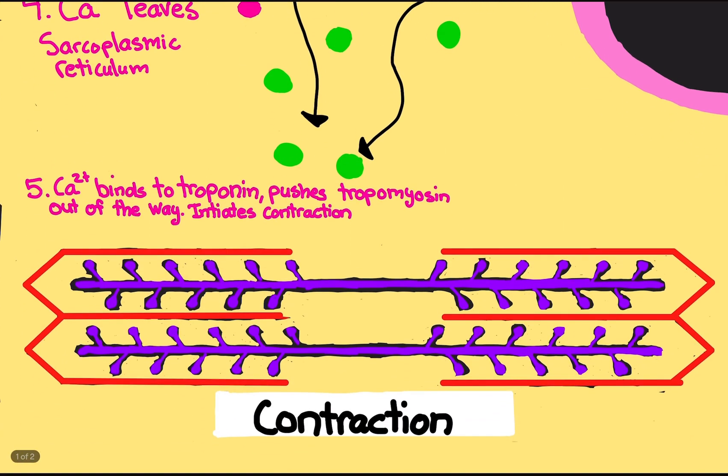Now calcium can bind to troponin and push tropomyosin out of the way, just like skeletal muscles, exactly the same. Calcium binds to troponin and pushes tropomyosin out of the way, which initiates the contraction. That's it. That's literally the heart contraction cycle right there. Well, that's the contraction, not the cycle, but that's how contractions happen.